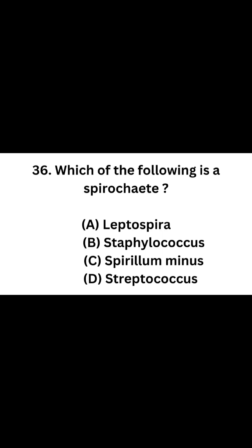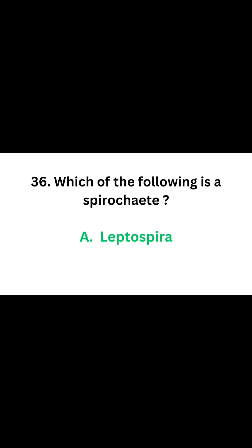Question number 36. Which of the following is a spirochete? Option A: Leptospira. Option B: Staphylococcus. Option C: Spirillum minus. Option D: Streptococcus. The correct answer is Option A, Leptospira. Leptospira is a spirochete.